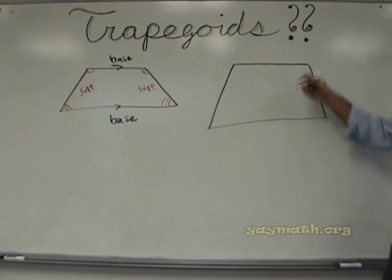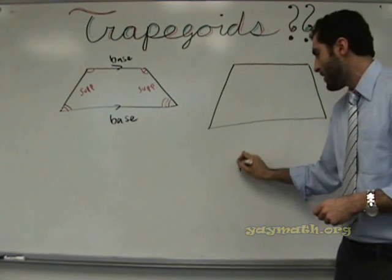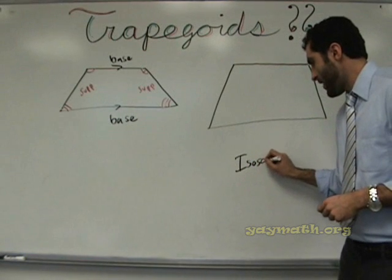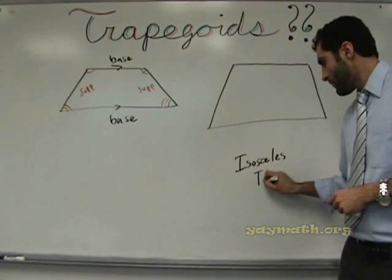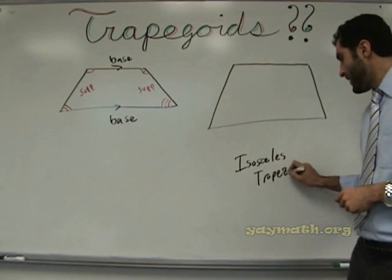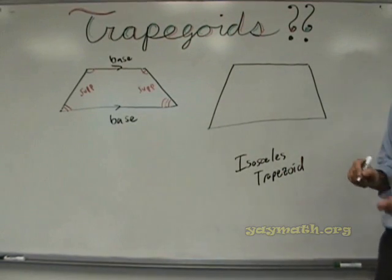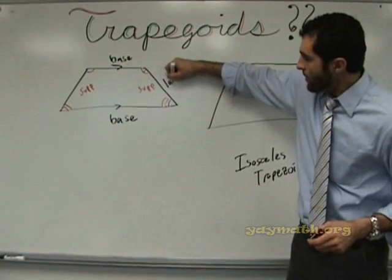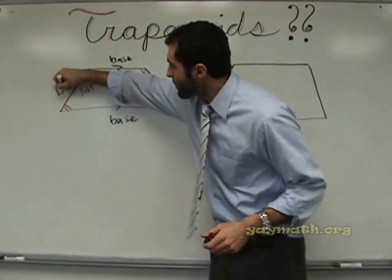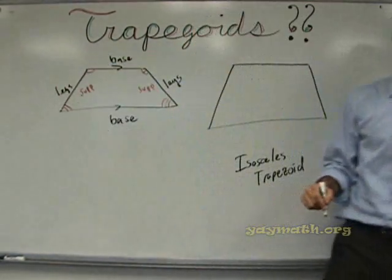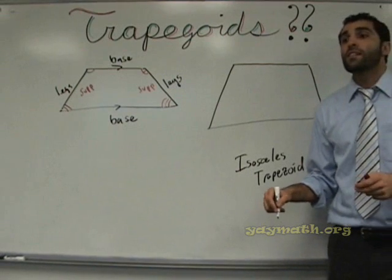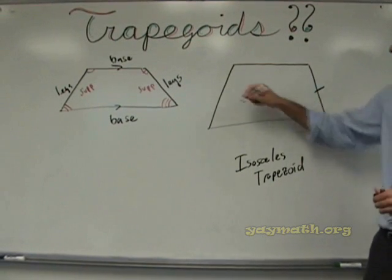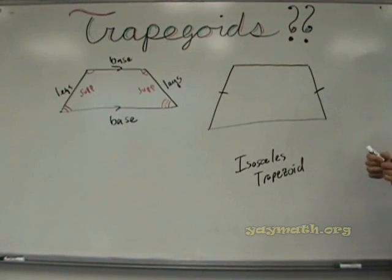And there's another type of trapezoid. This is called an isosceles trapezoid. Is this 6-6? Indeed. Okay. Isosceles trapezoid. These two are the bases. These two are called the legs.